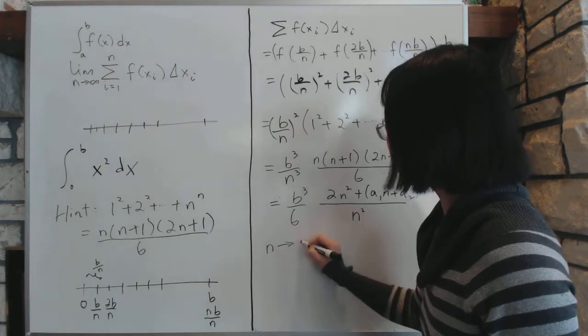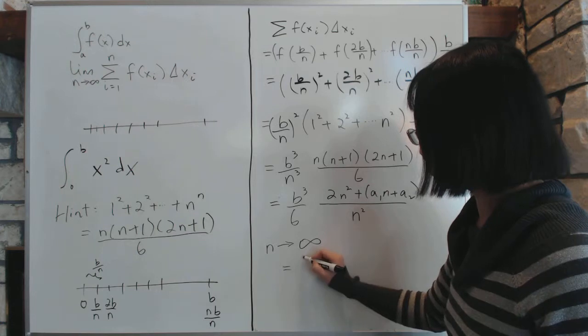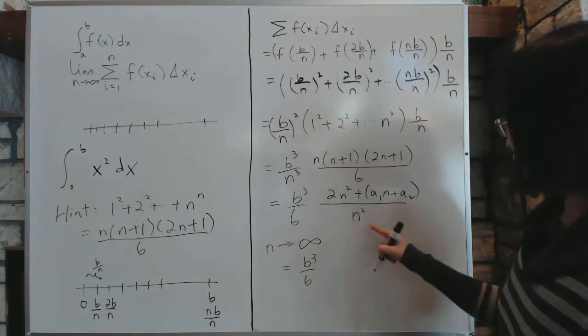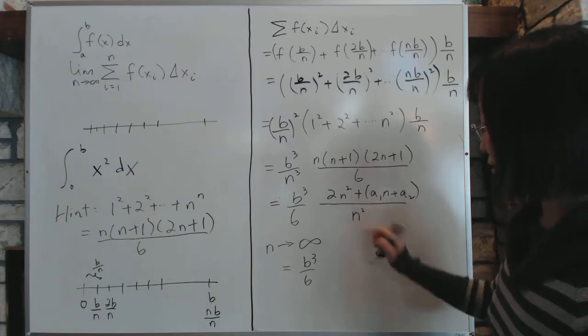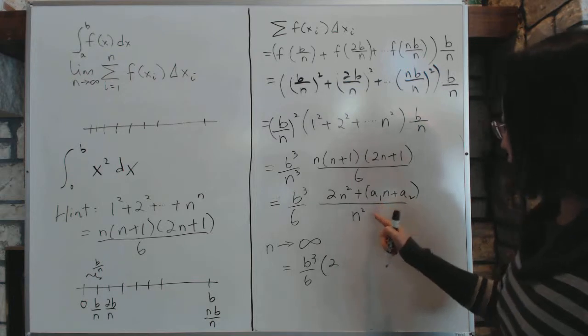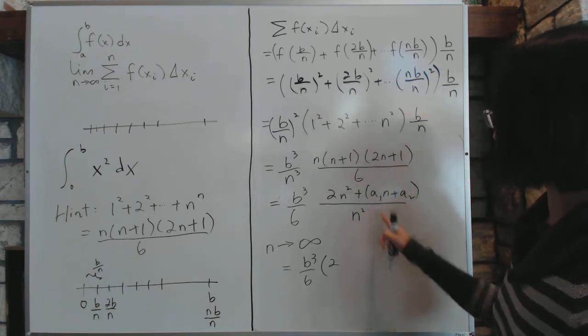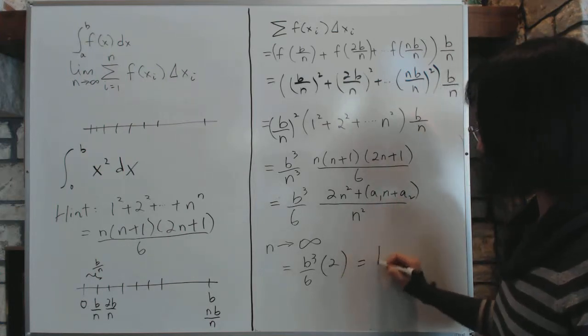So as n goes to infinity, then the whole thing will become b cubed over 6 times, well, the bottom will cancel out this. So you multiply by 2. And these, the n squared will dominate the power n and dominate the constant. So these will all vanish. So the only thing we have left is 2. So the answer, then, is b cubed over 3.